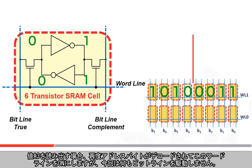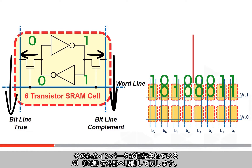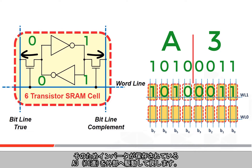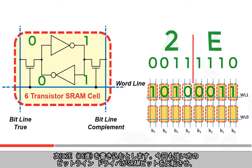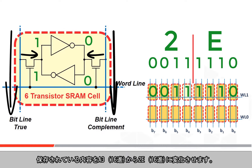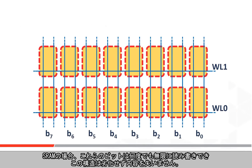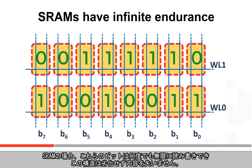When you want to read your A3 value, the address bytes are again decoded to enable the word line, but this time nothing outside the cell is driving the bit lines, so the inverters drive their saved A3 hex content back to your external world. Now if you write 2E hex, the stronger bit line drivers flip the SRAM bits, changing the content from A3 hex to 2E hex. These two feedback inverters now capture and hold your new 2E hex value.